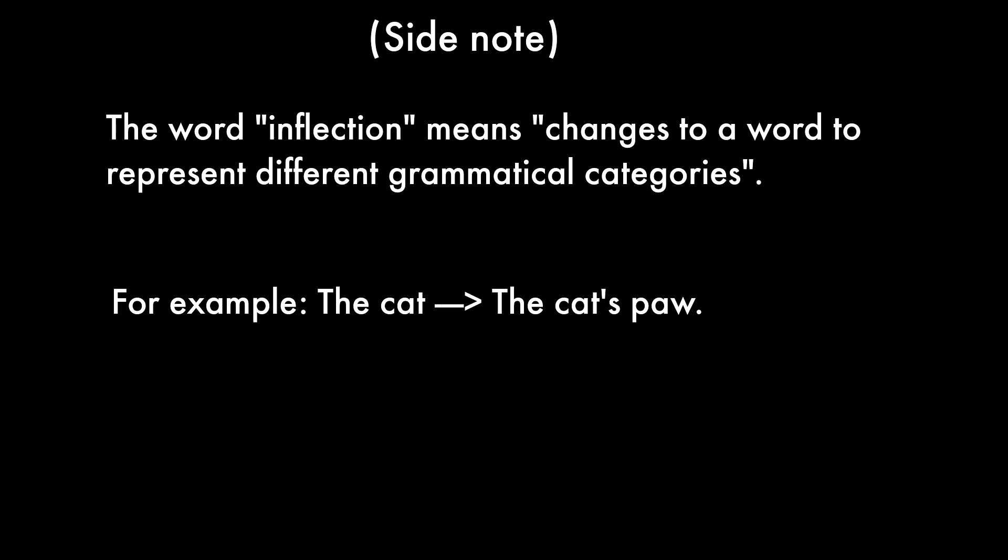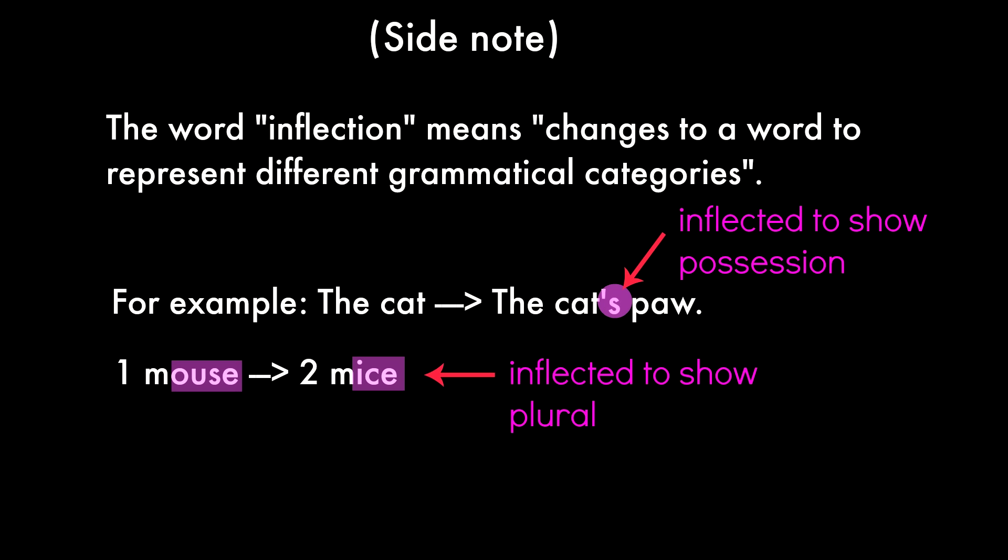The word inflection means changes to a word to represent different grammatical categories. For example, the word cat and the cat's paw. Here, the apostrophe s is a kind of inflection to show possession. And we have one mouse, but two mice. So here, the word is inflected to show plural.